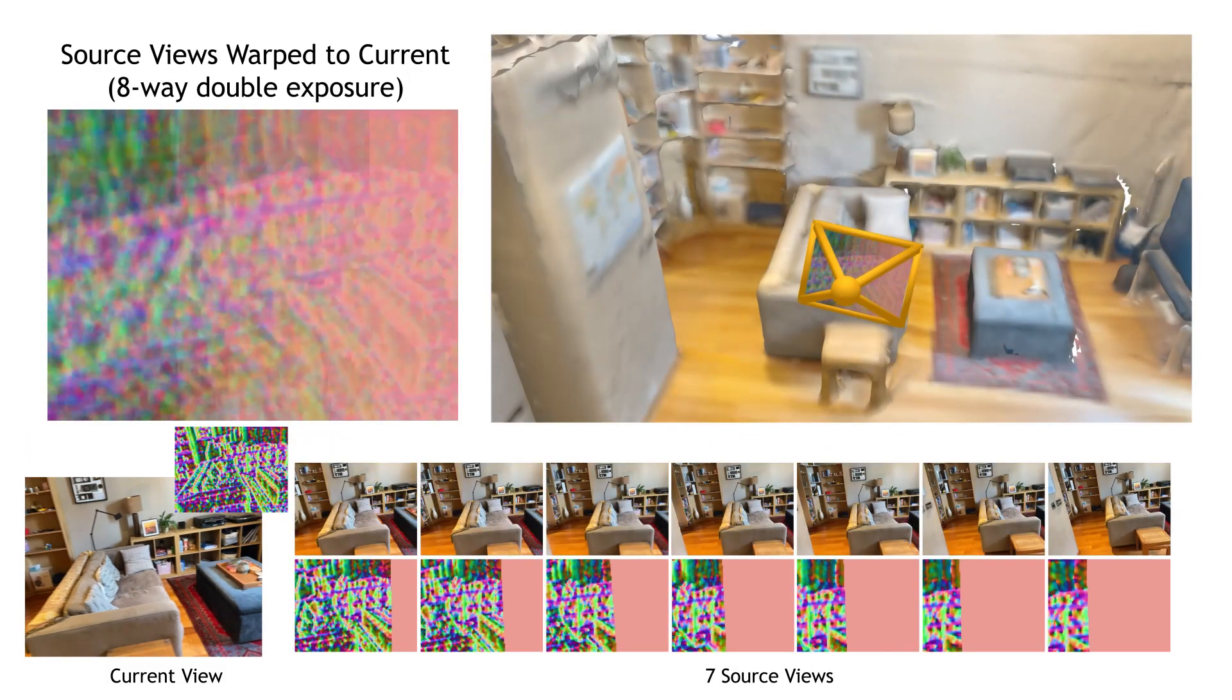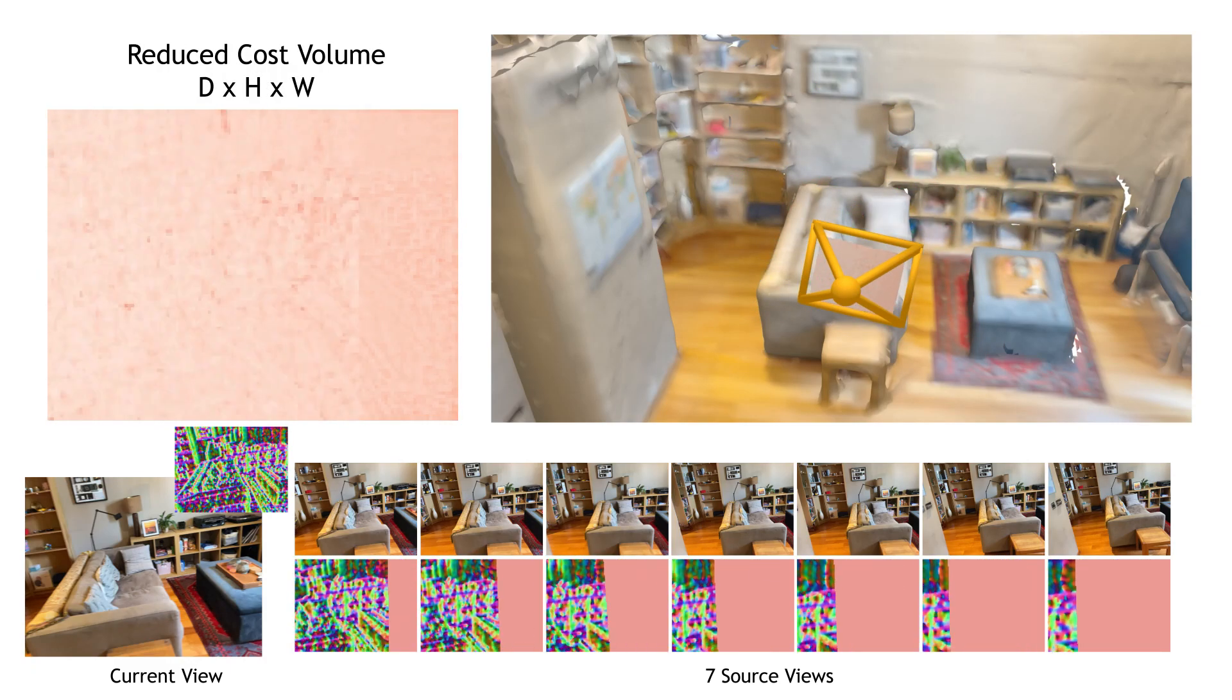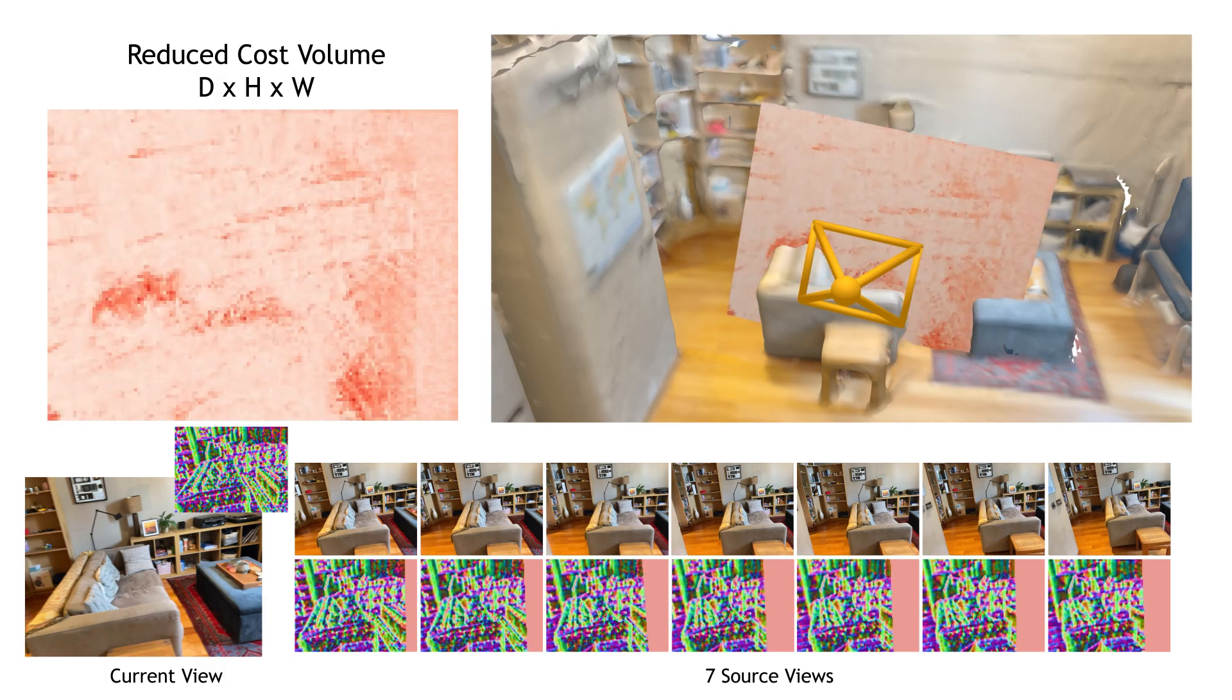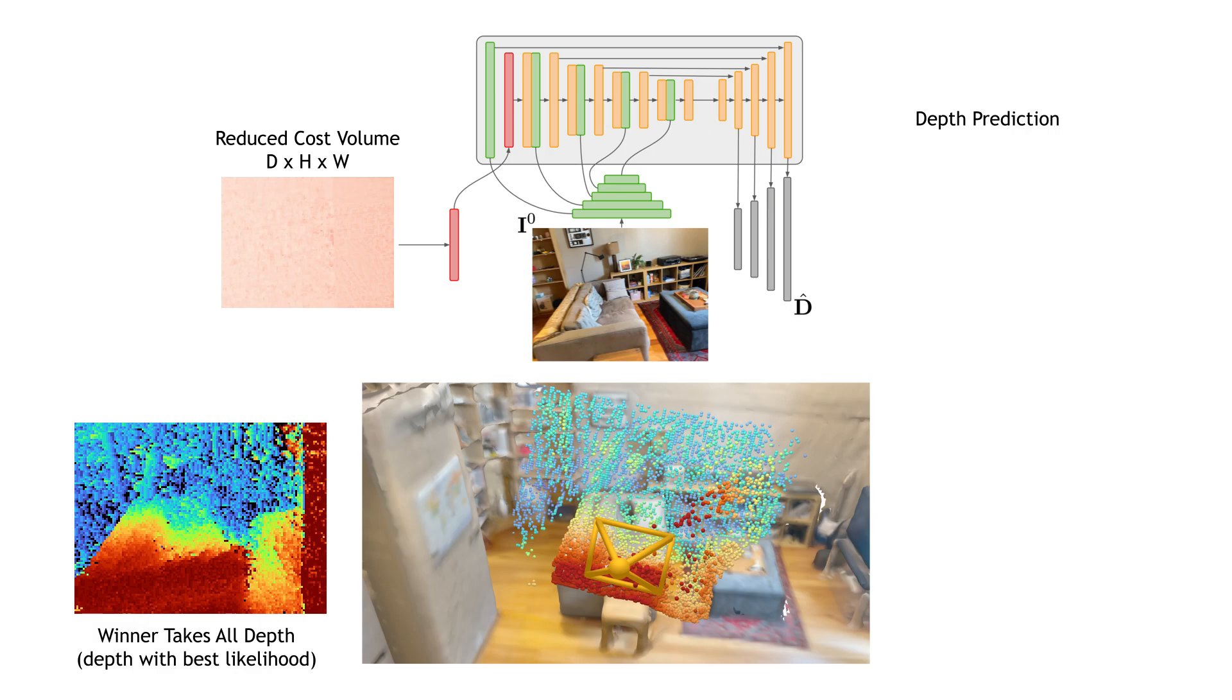We use 7 source frames, warping each source view into a cost volume. We reduce the cost volume, along with associated metadata, to a single value per pixel per depth plane. The cost volume provides strong metric depth estimates at every pixel, but is very sparse and noisy.